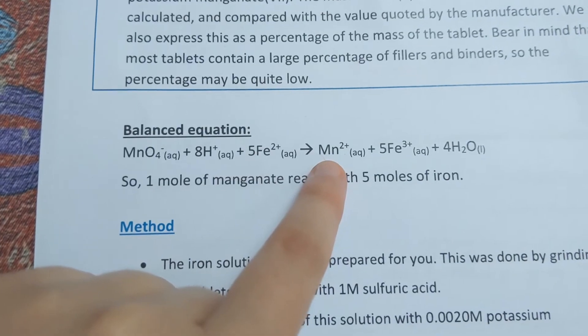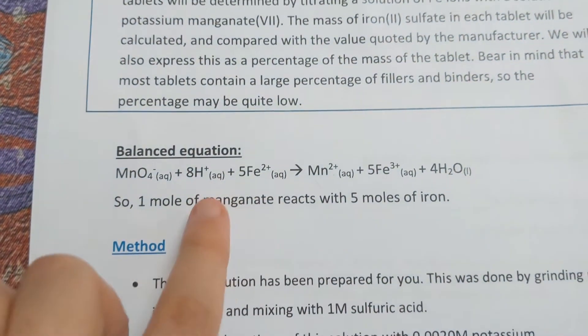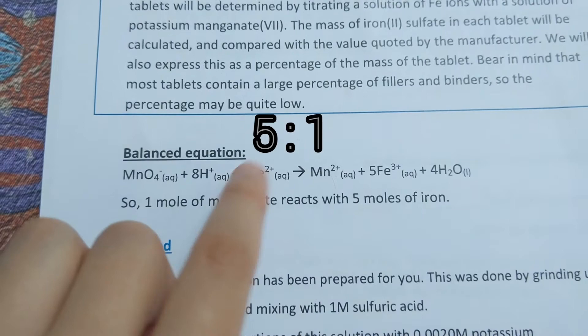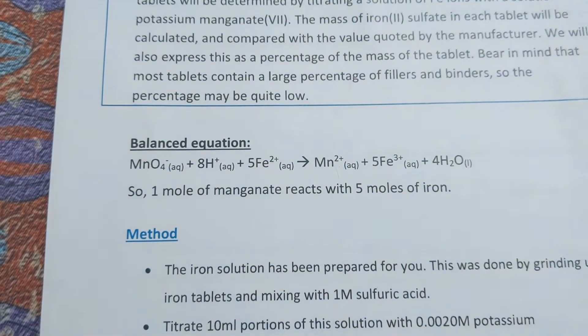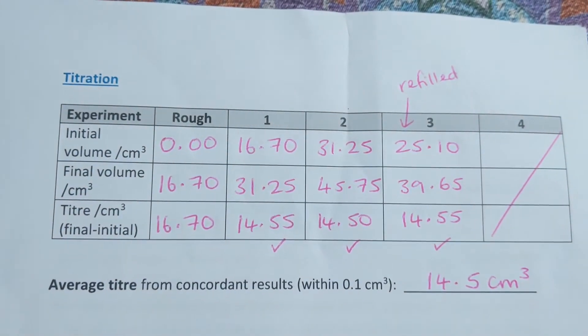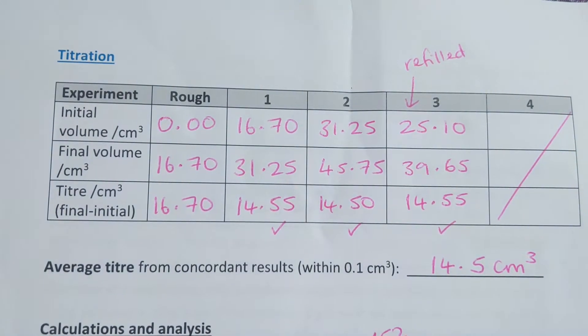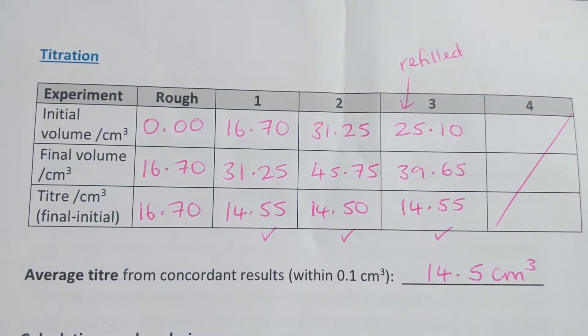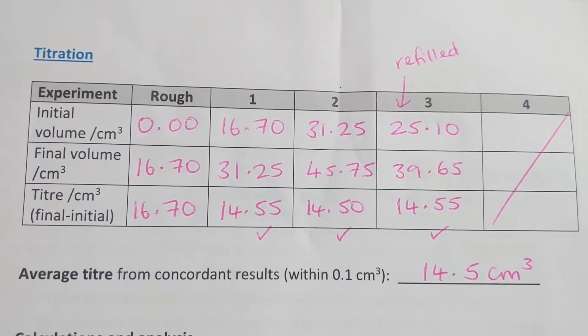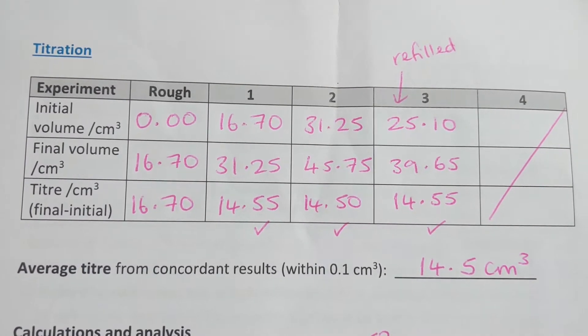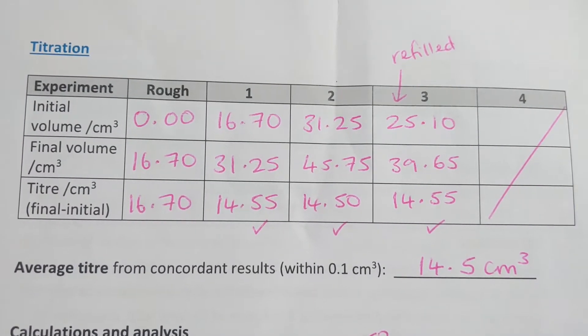We have a 5 to 1 ratio of the iron to the manganese ions. Here we have some sample results, so we carried out a titration with the purple potassium manganate solution in the burette and the iron solution in the conical flask.